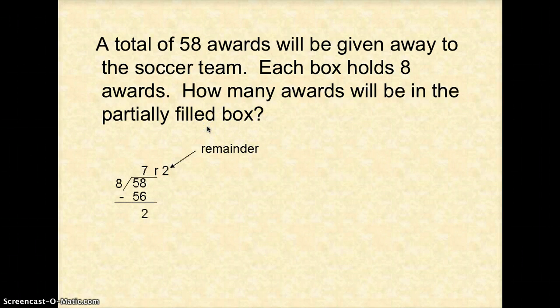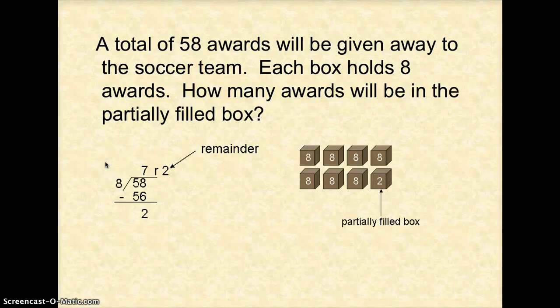So we take, we do 58 divided by 8, which is 7. 7 times 8 is 56. Subtract and you get 2, with a remainder of 2. So we can make 7 whole groups, and 2 is what's left over. So 2 would be the remainder, which would be in the partially filled box. Alright, so on this one you would just use the remainder.